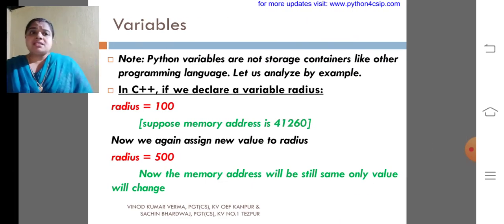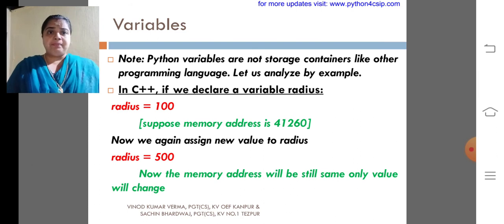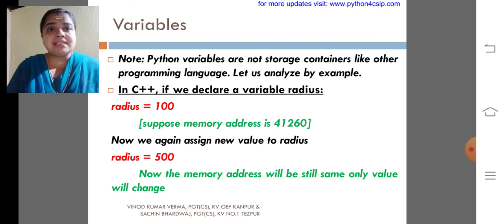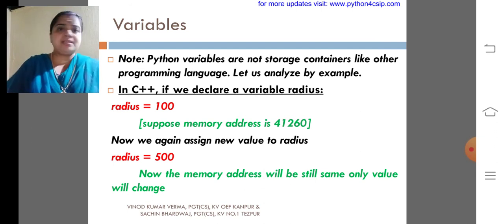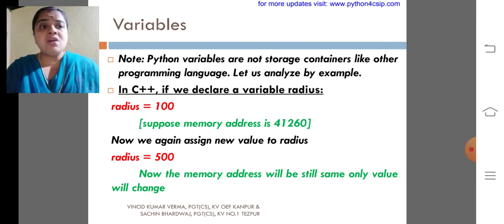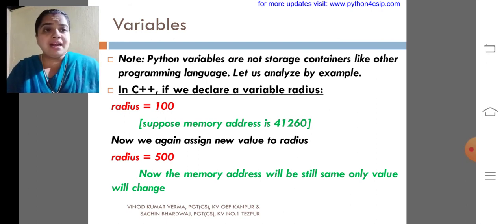Python variables are not storage containers like other programming languages. That is a very important statement. It is not a storage container. If we declare a variable radius equal to 100 in C++, suppose the memory address is 41260. Now we again assign a new value to the radius 500. The memory address will be still same. Only the value will be changed.